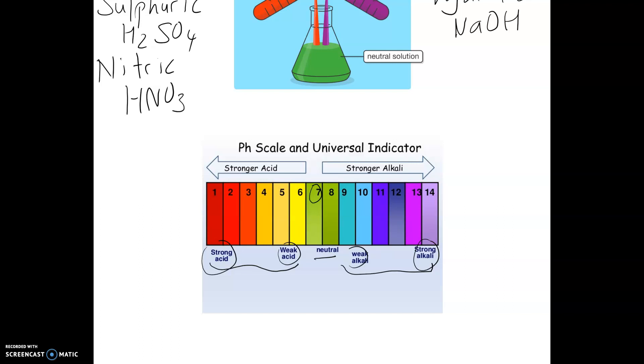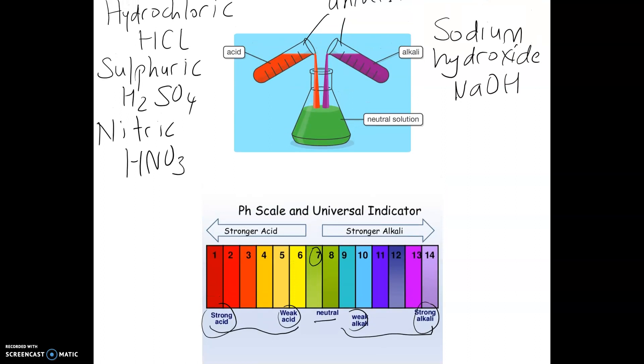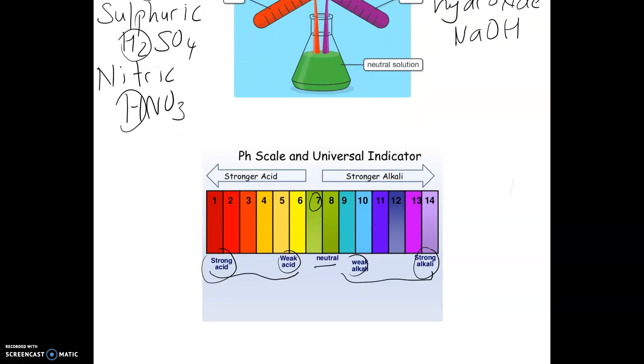And pH 14 is a strong alkaline. We can use things like pH probes as well, which give you a more accurate reading. What makes an acid? If you notice here, each one of them has hydrogen. If you have an acid, they are H+ donors, which means they donate H+ ions, hydrogen ions.